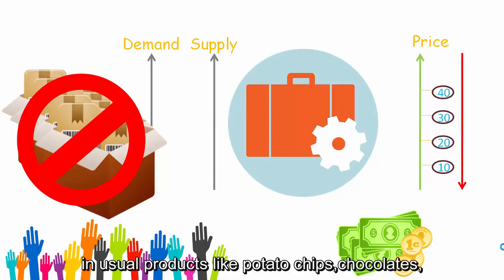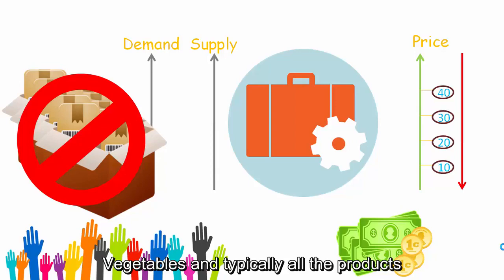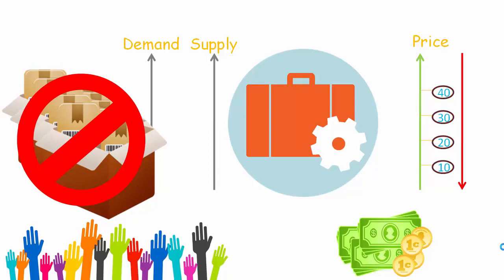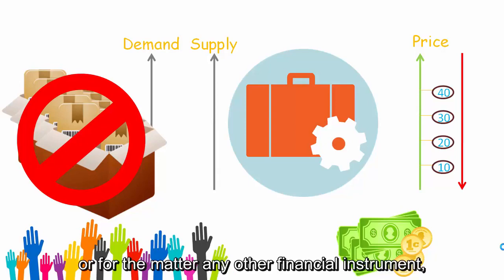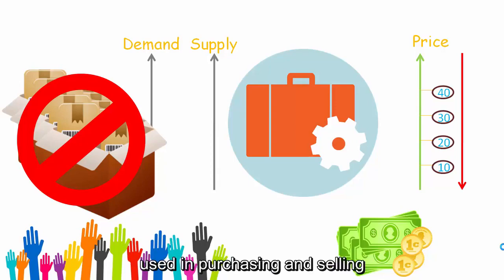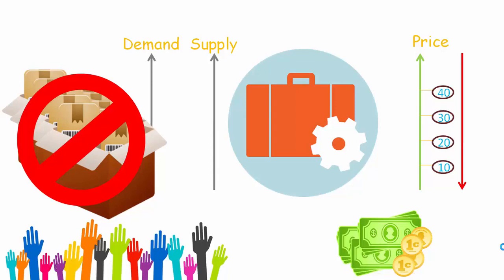This applies to usual products like potato chips, chocolates, vegetables, and essentially all products. And similarly, with stocks, commodities, options, futures, or any other financial instrument, the same demand and supply principles used in purchasing and selling everyday goods apply to these instruments as well.